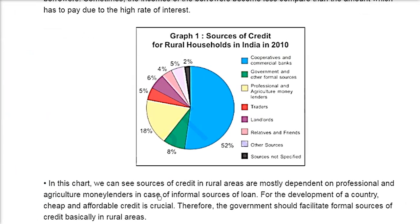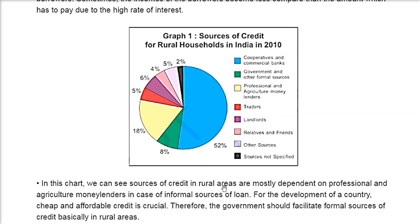In rural areas, people are mostly dependent on moneylenders — the sahukars — for informal loans. For the development of a country, loans from banks and saikari samiti should be available at cheap and affordable rates. Therefore, the government should facilitate formal sources of credit, especially in rural areas, because rural people often lack collateral and end up in a debt trap by borrowing from moneylenders at any interest rate.